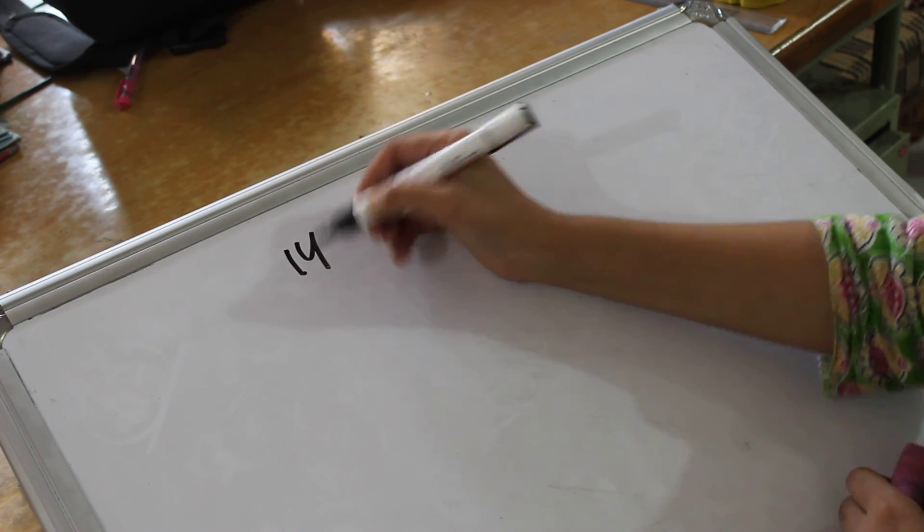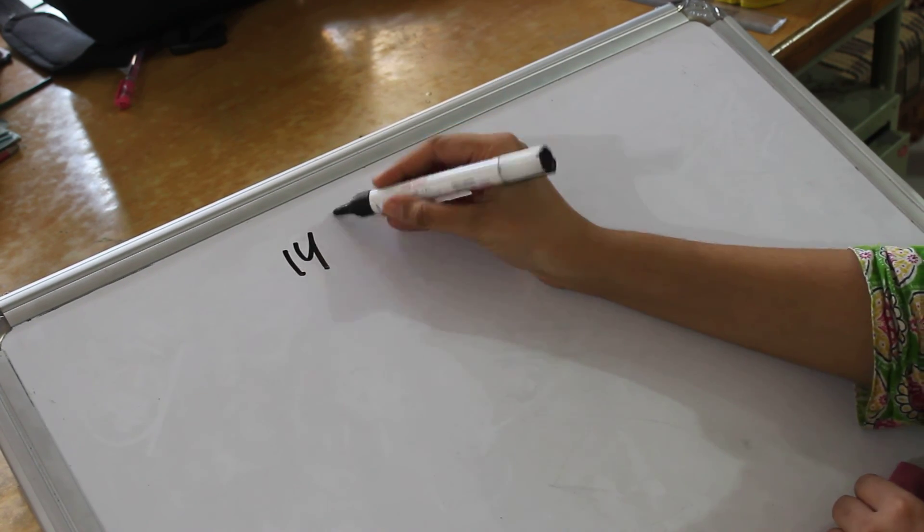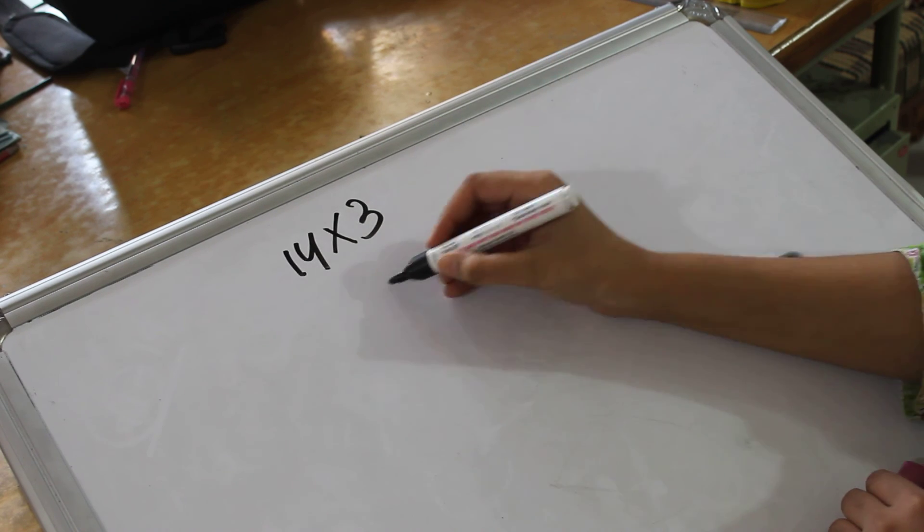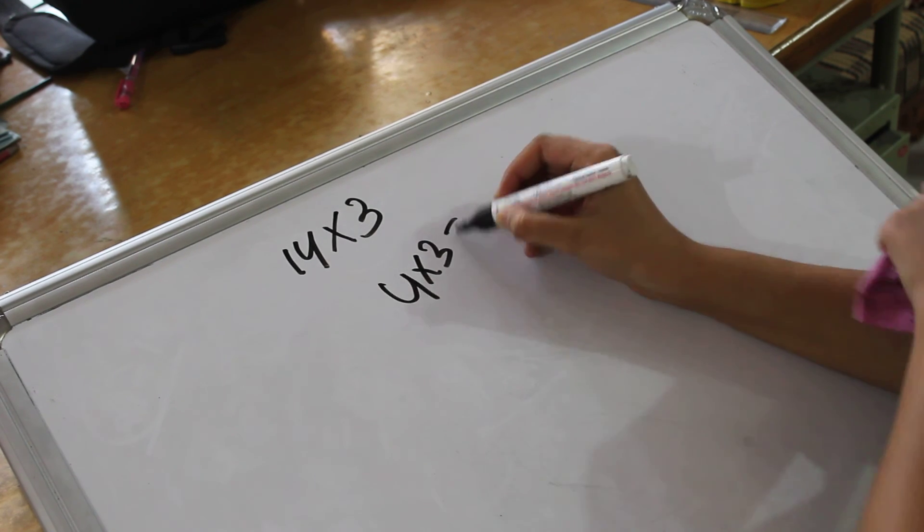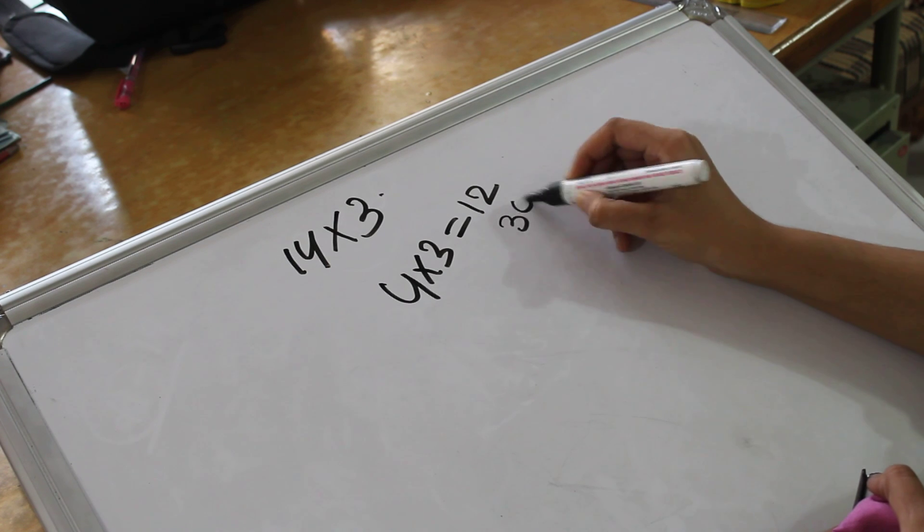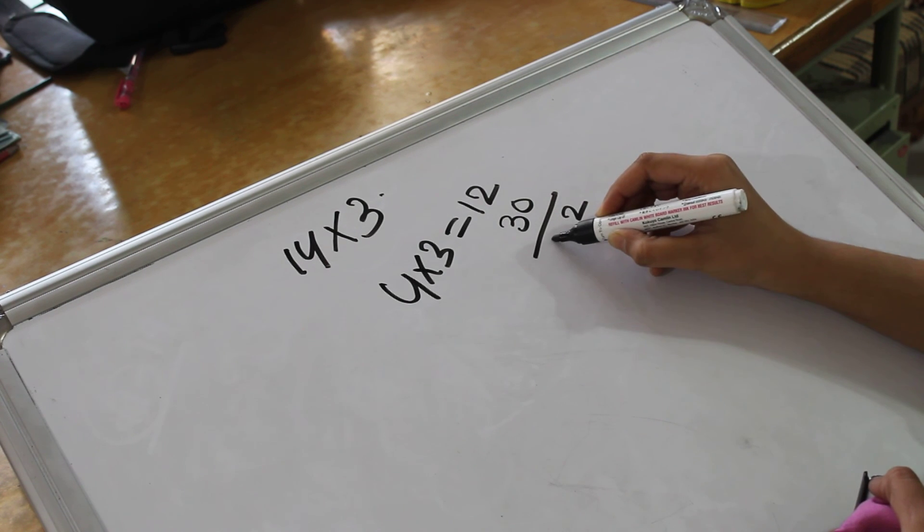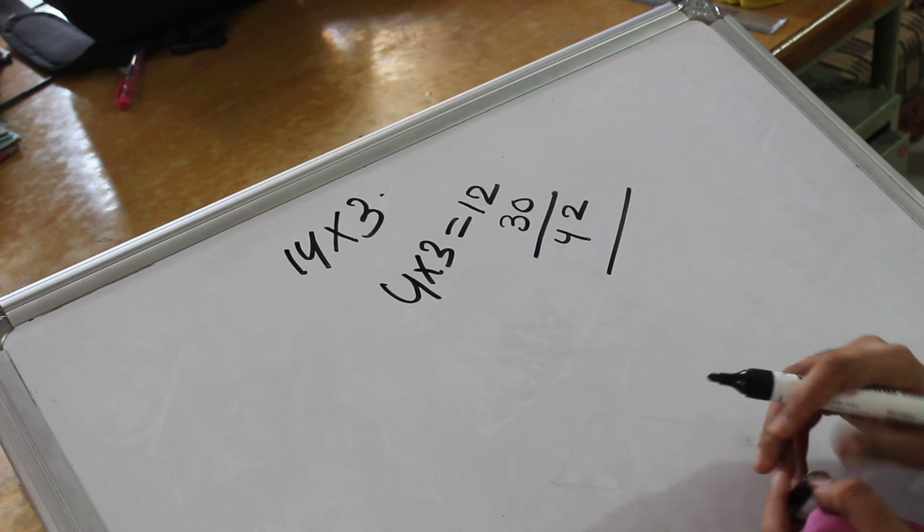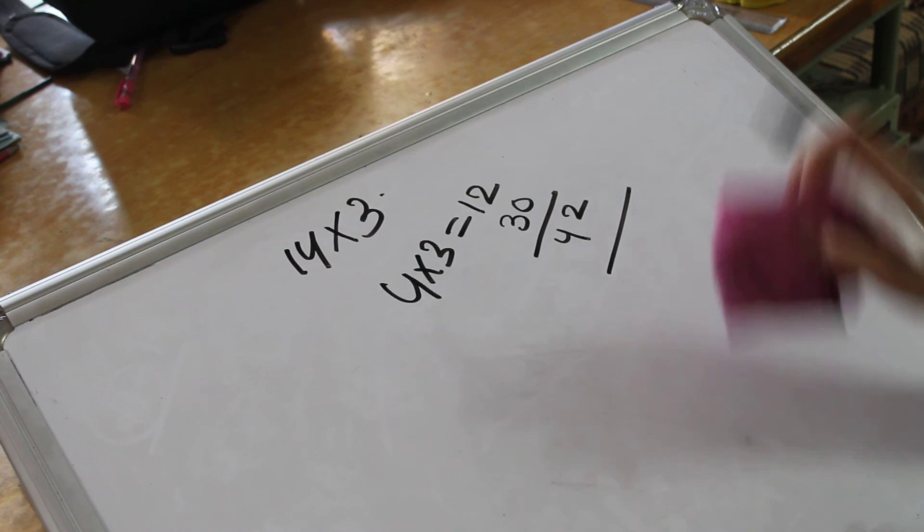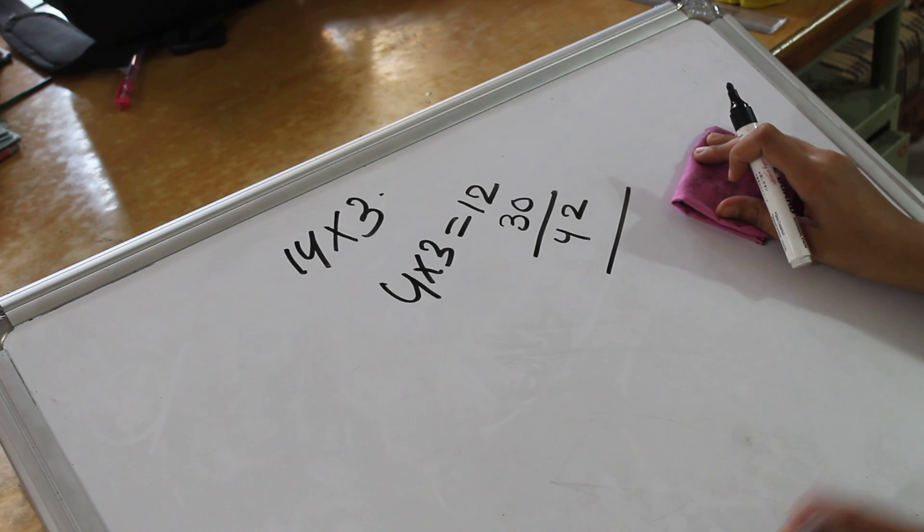14 table. Remember the table of 4 and do the magic. I'm taking 3. 4 into 3 is 12. This will become 30. So plus 30, 2, 4. That's 42. Till now, easy.